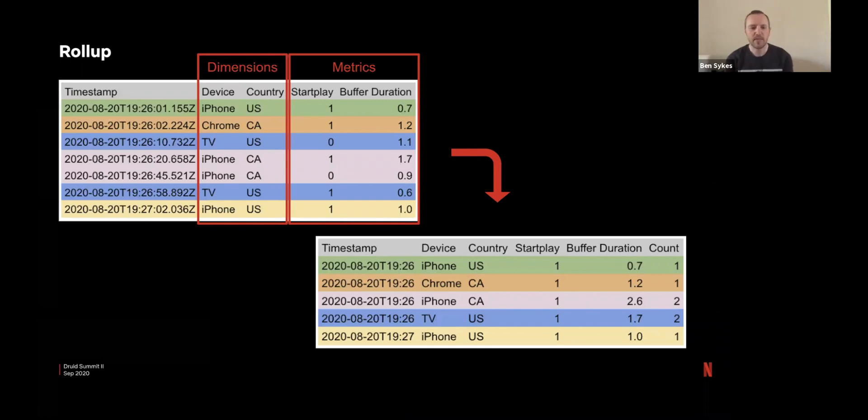A big topic for us is rollup because we process a lot of events. We're currently doing around 2 million events per second and we keep around 2 trillion events in the data store before it automatically ages out and unloads.